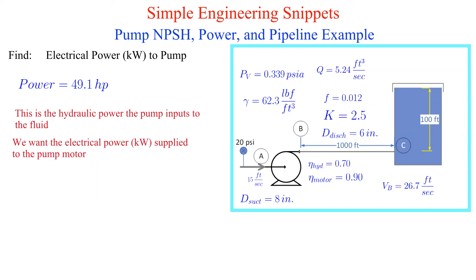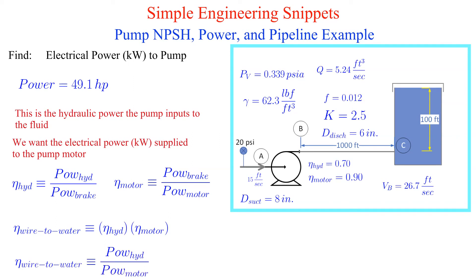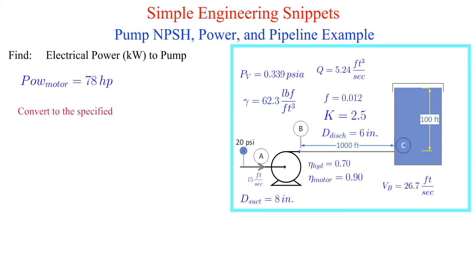We are provided the pump hydraulic efficiency and the pump's motor electrical efficiency. Multiplying these efficiencies together results in the wire to water efficiency. We can use this to determine the electrical power supplied to the pump motor which is 78 horsepower. Now we convert horsepower into the requested units of kilowatts and obtain 58.2 kilowatts.